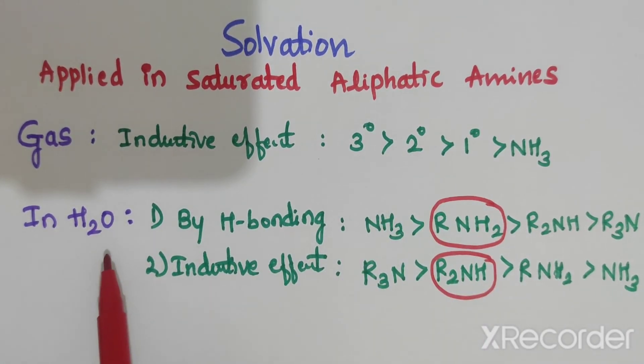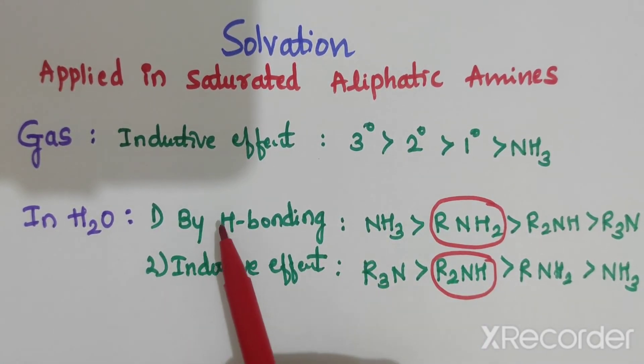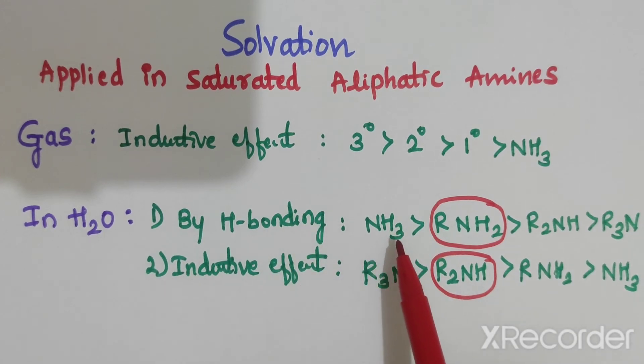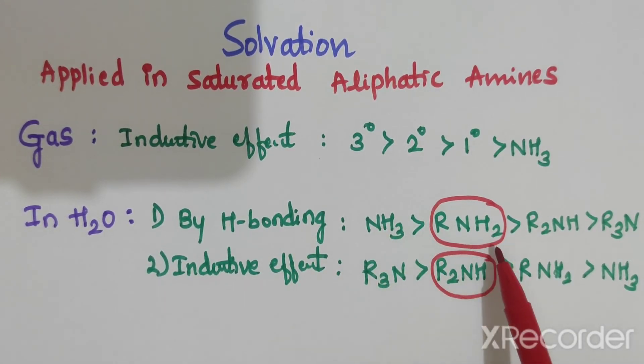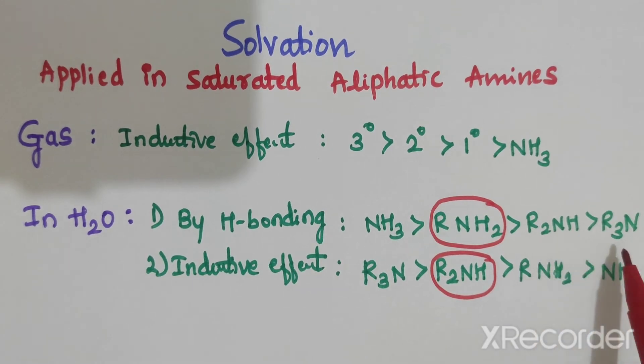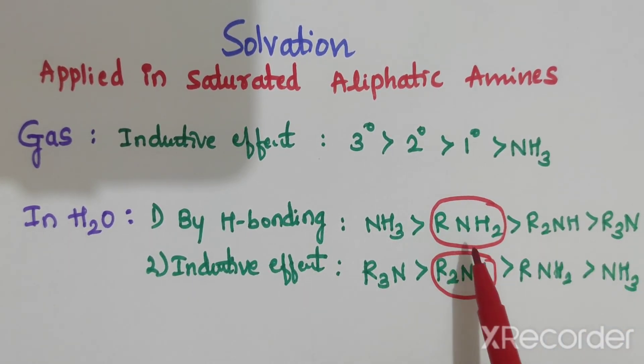In case of solvation by hydrogen bonding, you will get ammonia is more basic than RNH2, then R2NH, then R3N—primary, secondary, and tertiary amine.